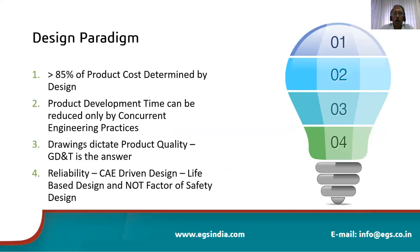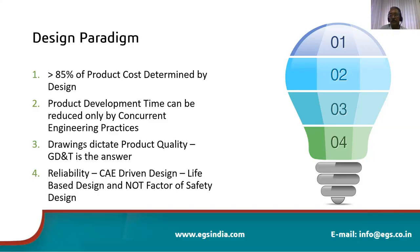Over 85 percent of the product cost is determined by design, whether we like it or not. The other 15 percent involves operational activities such as inventory control and supplier cost control. If we set goals for the design department to contain product development costs, they hold the key to success. Product development time can be reduced only by concurrent engineering processes, bringing together the supplier, OEM, customer, and voice of the customer as a cross-functional team.